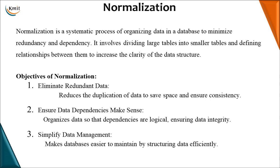The objectives of normalization are: one, eliminate redundant data — we don't want duplication. When all the data are put in a single table there is so much duplication, so this helps reduce it, save space, and ensure consistency. Because when you have the same data repeated, any updates, insertions, or changes may lead to inconsistency. By converting into smaller tables, we avoid that. Two, ensure data dependencies — this organizes data so that dependencies are logical and data integrity is maintained, making the database easier to maintain.